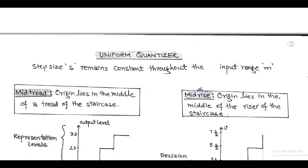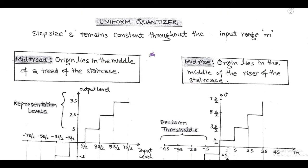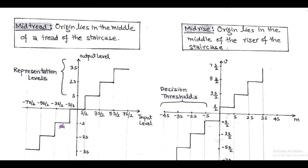First, we discuss uniform quantization or quantizer. In uniform quantizer, step size S remains constant throughout the input range M. The characteristic of uniform quantizer is described by a staircase function of equal steps.